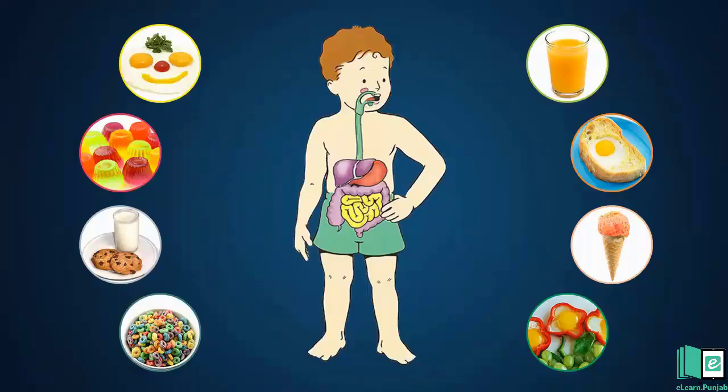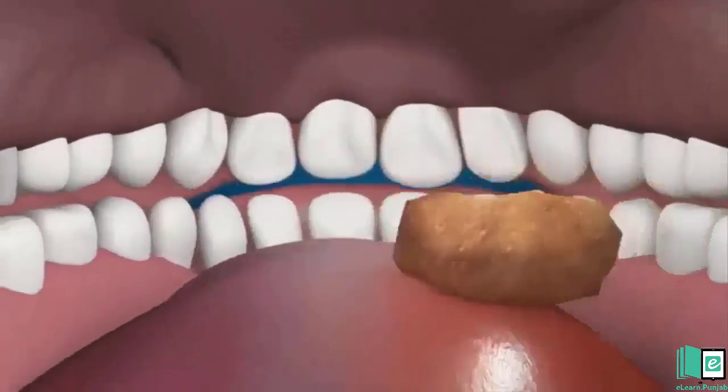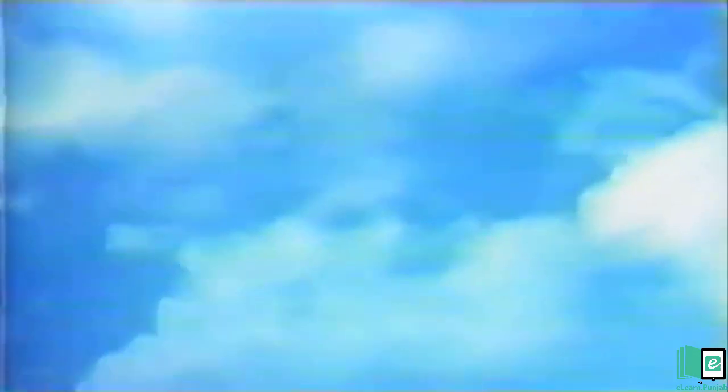All living things need energy to move and grow. They get energy by breaking down food substances. We need oxygen to break down the food in every cell of our body. Our lungs take oxygen from the air during respiration. Breathing is the process that moves air in and out of the lungs. Respiration is the process by which living organisms use oxygen and food to produce energy. Carbon dioxide is also produced during this process. The parts of the body used in breathing form the respiratory system.